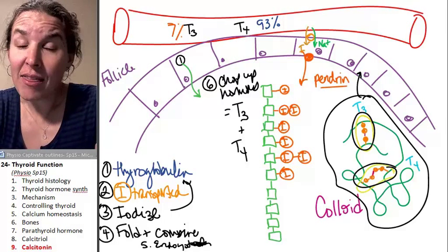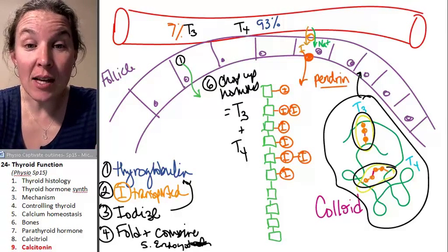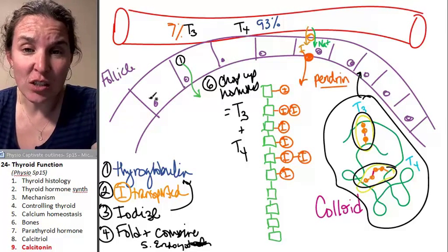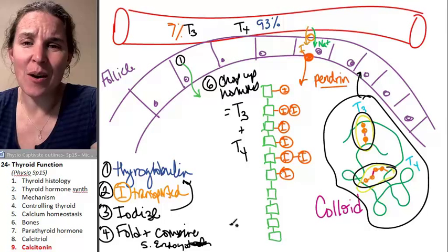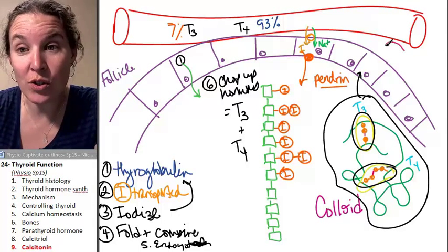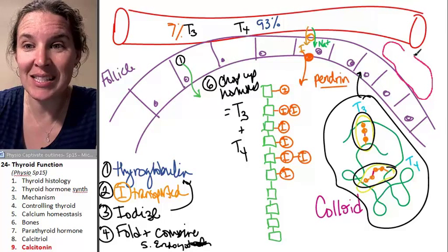We're back to the thyroid gland and there's someone I didn't tell you about before. We have follicle cells making thyroid hormone. In your thyroid gland you also have little guys called C cells.